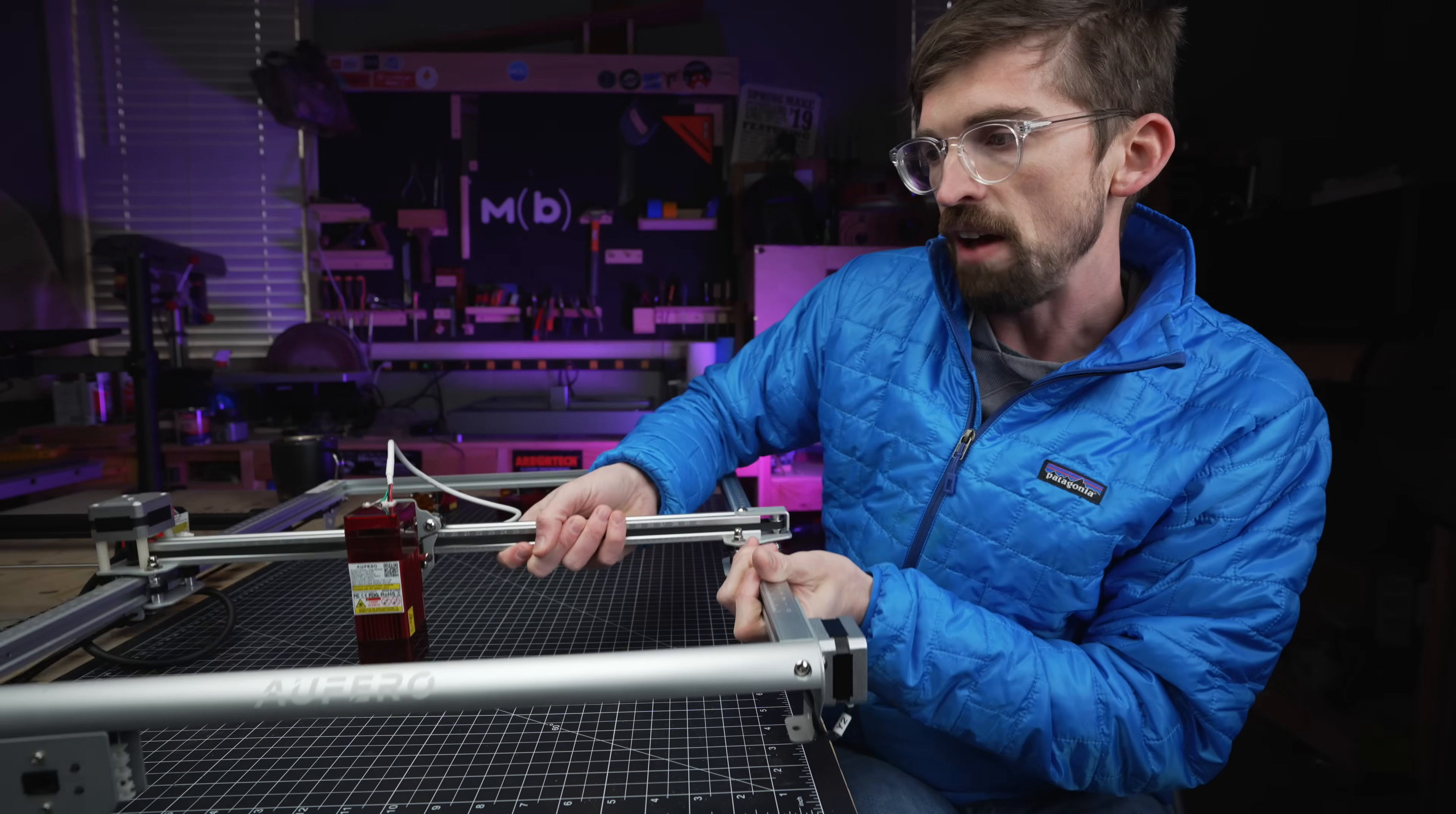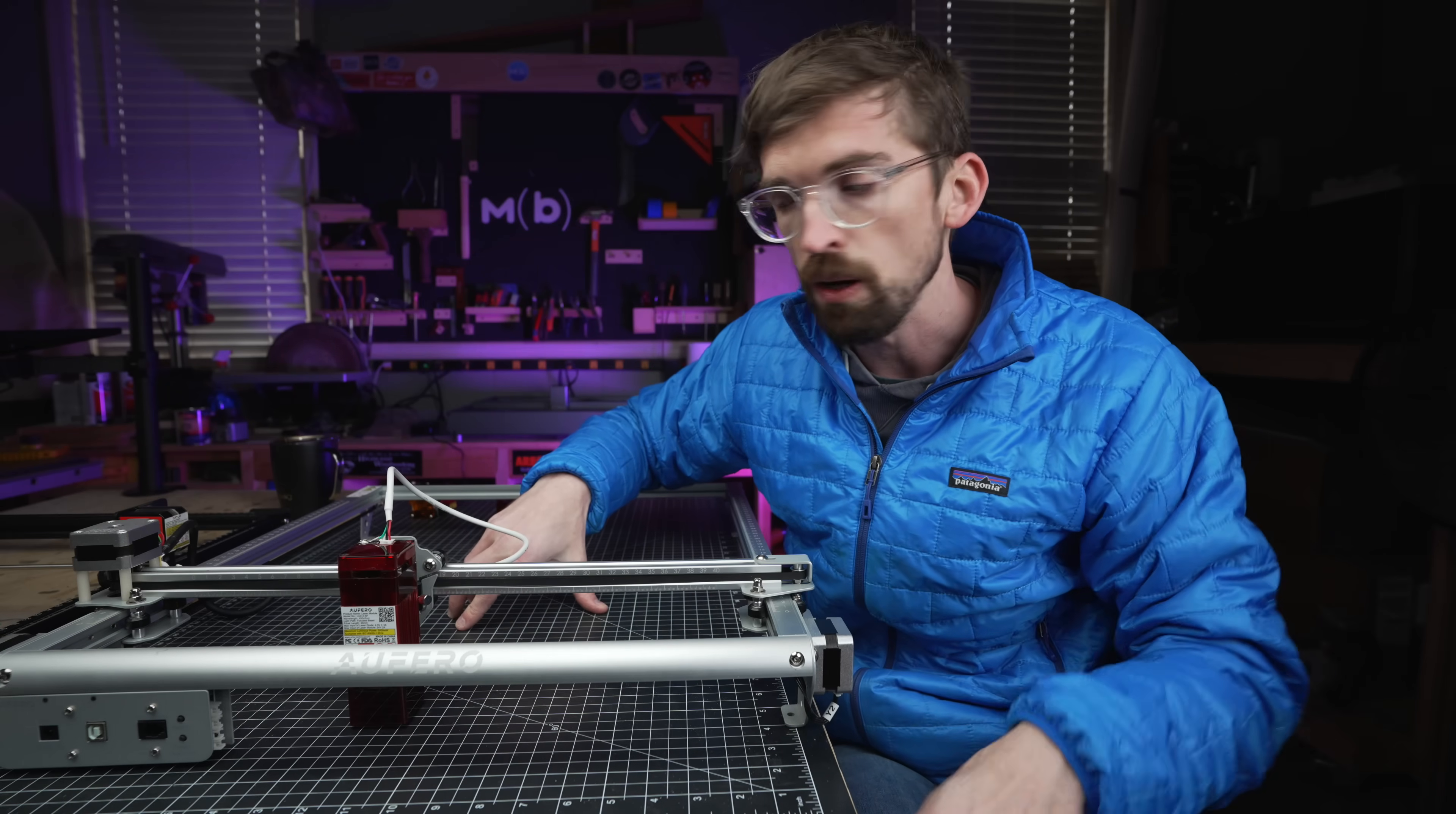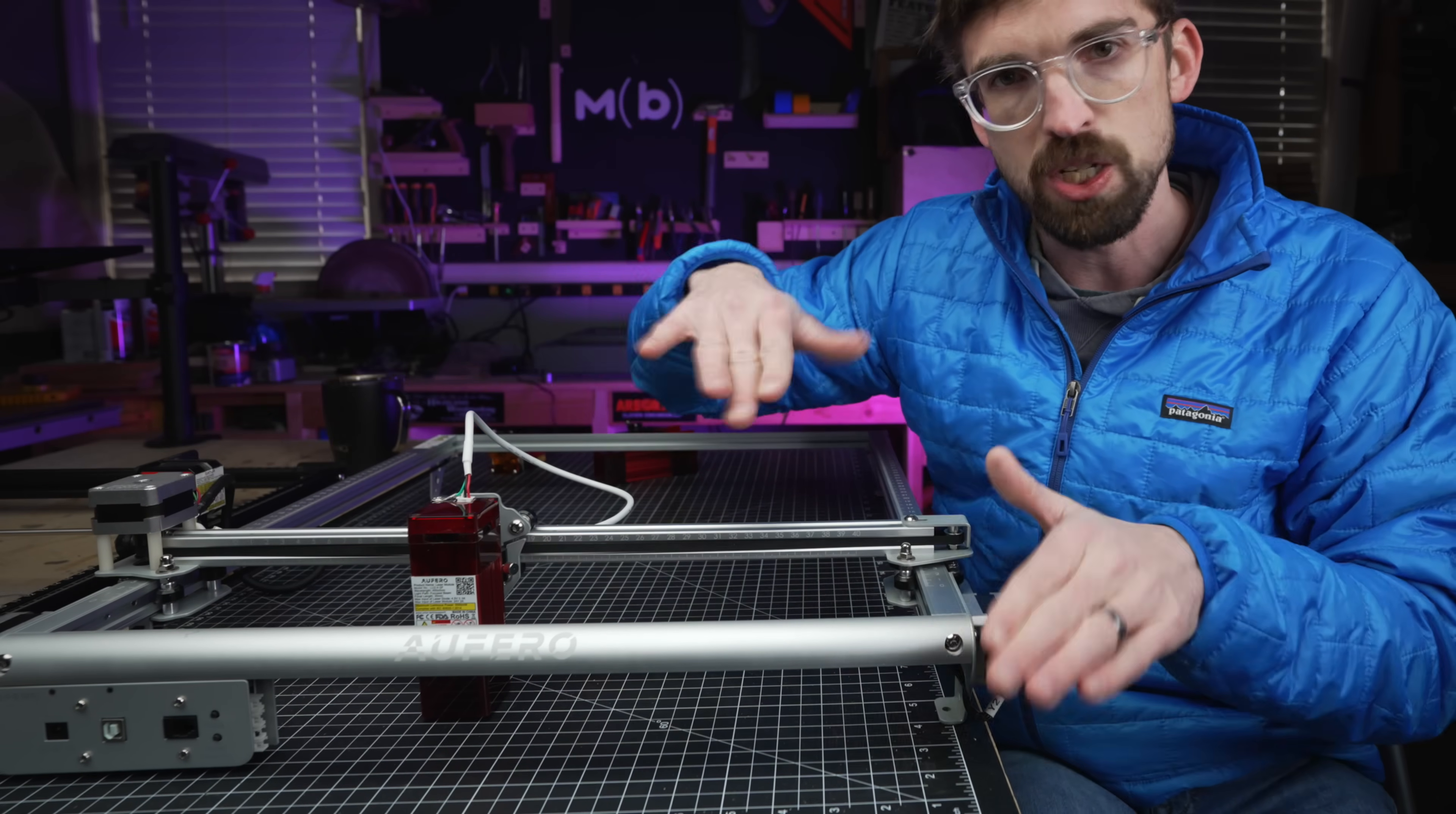So one thing I found I've had to do a few times is I'll actually push this all the way up to where it is physically hitting the ends on both sides. Then I actually move the laser to the position I want inside of the software. Because at that point, I know this is square. And so if I'm moving it in the software, everything's going to be good. Versus if I just moved it by hand, there's a chance that I could get one of these sides off, which is going to cause issues.